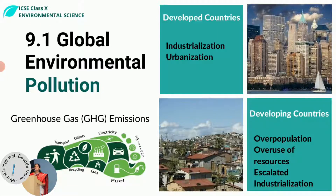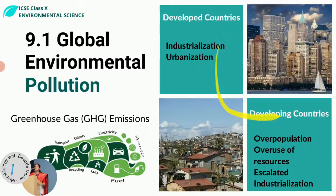When we see global environmental pollution, it is caused by all countries. The UN has divided countries based on their economic status — GDP, industrialization, per capita income and many other factors — into developed and developing countries. Developed countries say that developing countries are causing the problem, and developing countries say it's the developed countries adding to the pollution. Let us see how each one of them is contributing.